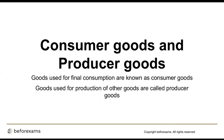When we talk about goods and services, it is very important to define goods. Goods are basically a commodity — any commodity — and they are tangible; they can be seen and touched. There is a time gap between production and consumption of goods. Goods can be stored and used later, and goods can be transferred from one place to another.